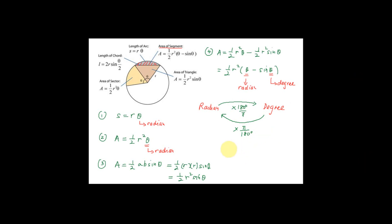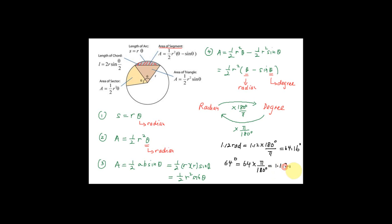For example, if you have 1.12 radians and want to change it to degrees, you use 1.12 times 180 over pi, which gives you 64.16 degrees. Conversely, if you have 64 degrees and want to change it to radians, you multiply by pi over 180, which gives you 1.117 radians.